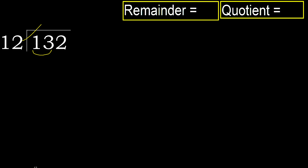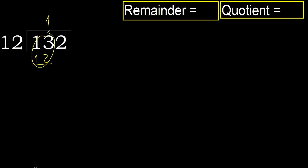12 multiplied by 2 is 24, 24 is greater. 12 multiplied by 1 is 12, is not greater. Subtract: 13 minus 12 is 1. Next.